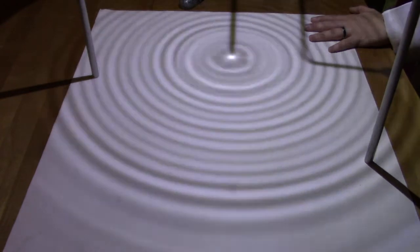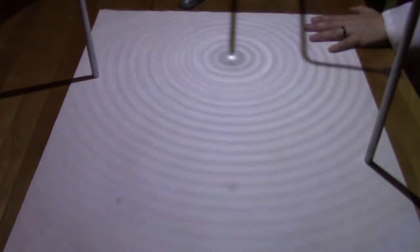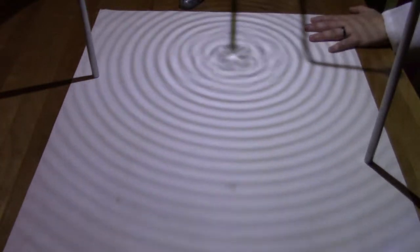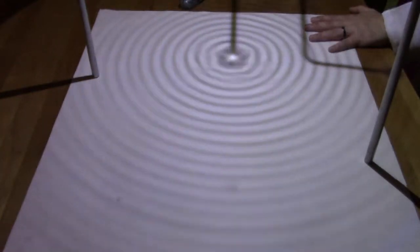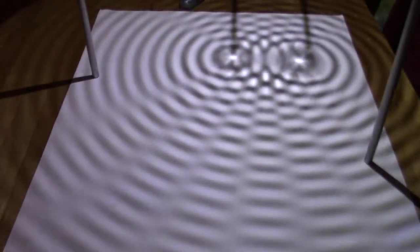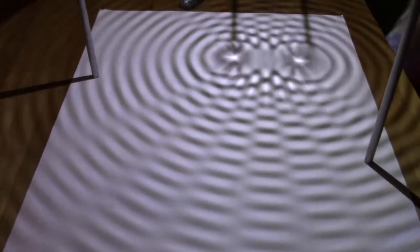Now for reference we'll look at the ripples from just a single wave. But when I have both of them running you can see some very clear null lines.